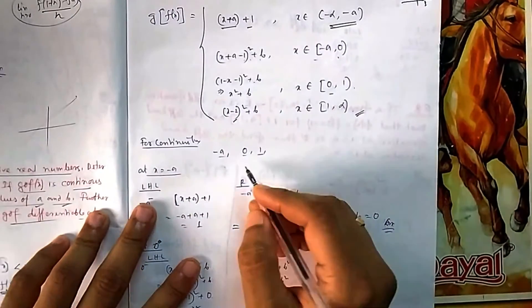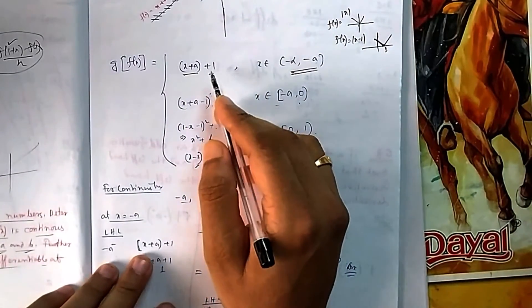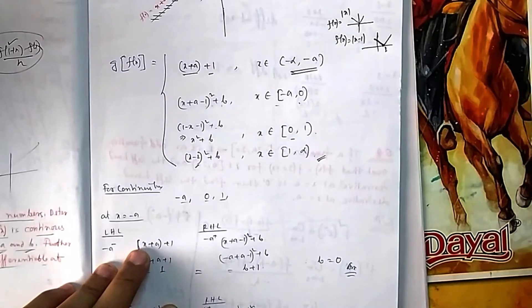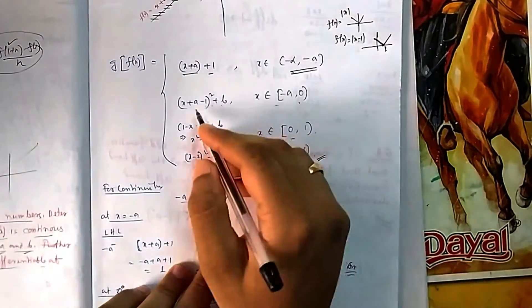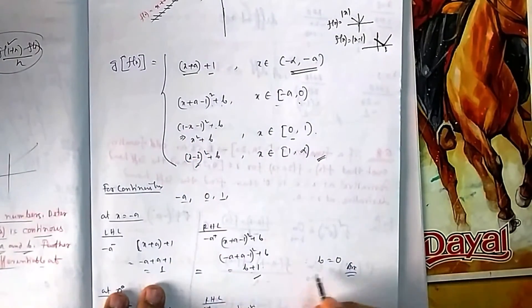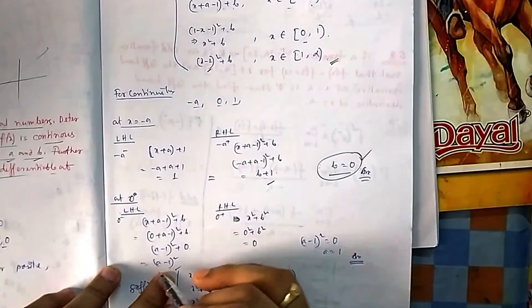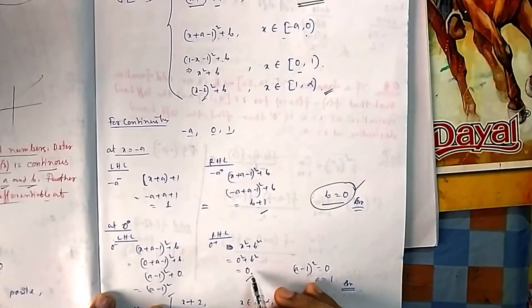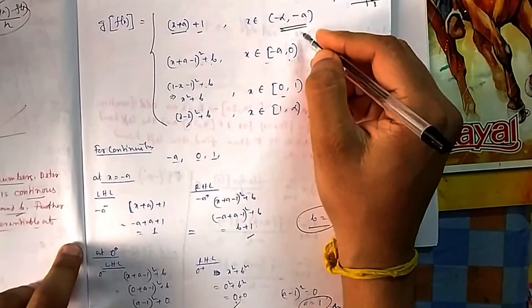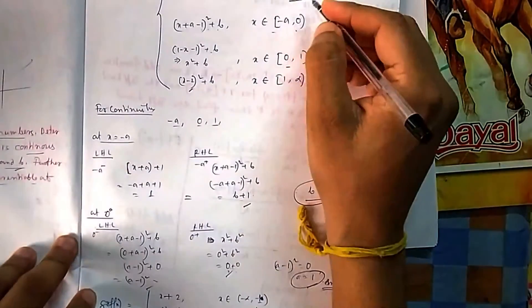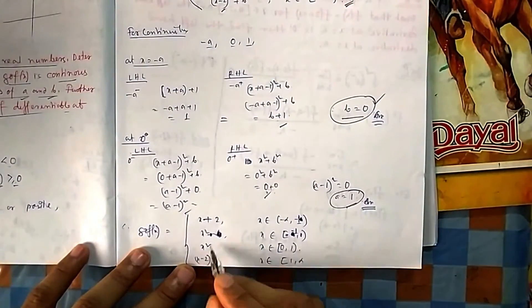Now apply continuity of g∘f at the break points −1, 0, and 1. At x = −1: the left limit gives 1 and the right limit gives b + 1, so b = 0. At x = 0: the left limit gives (a − 1)² and the right limit gives 0 (since b = 0), so (a − 1)² = 0, giving a = 1. Substituting a = 1 and b = 0, write the final piecewise expression for g∘f.